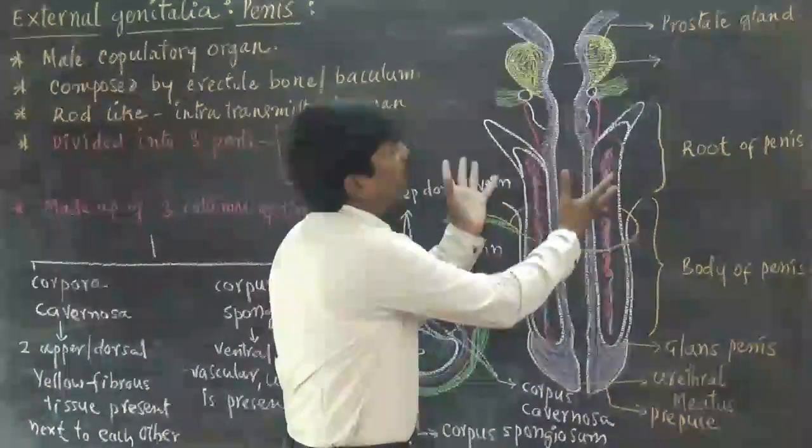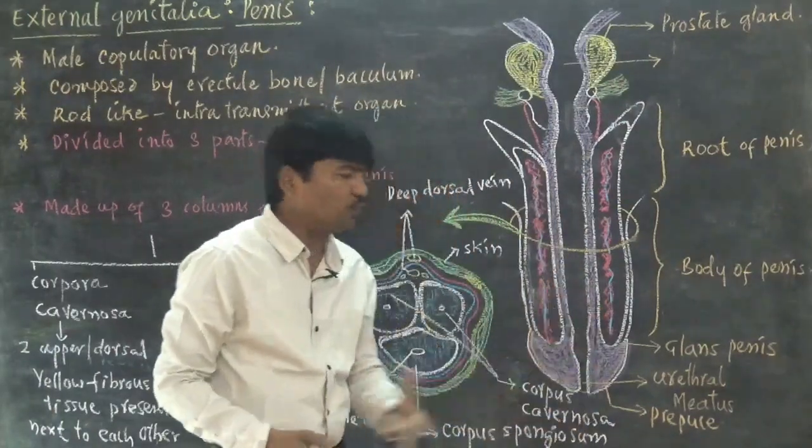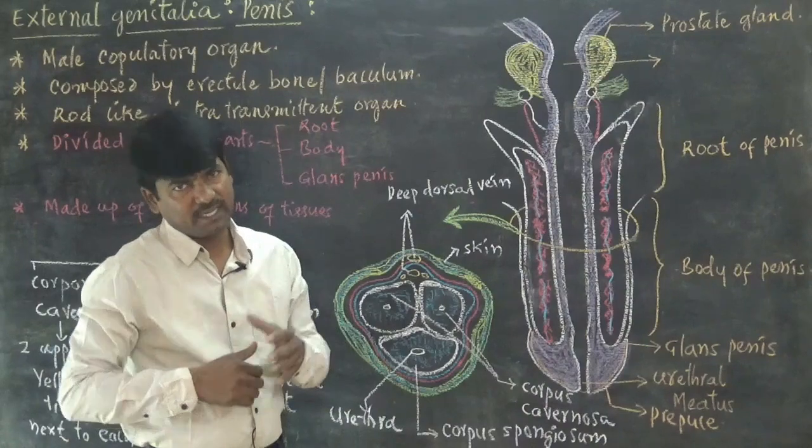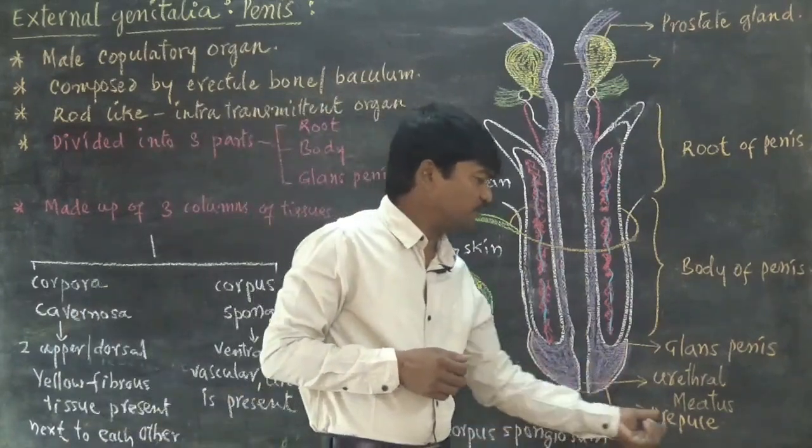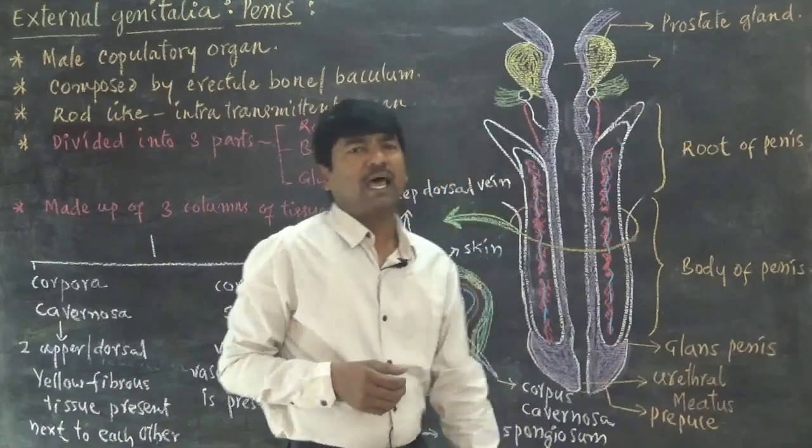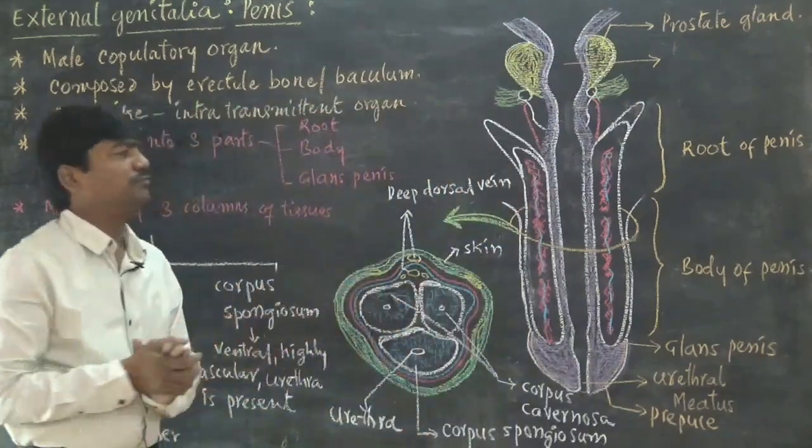The total penis is externally covered by a specific folded membrane. That loose folded membrane is known as prepuce.